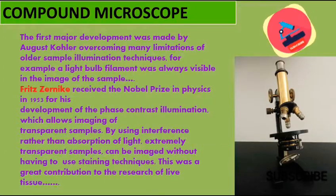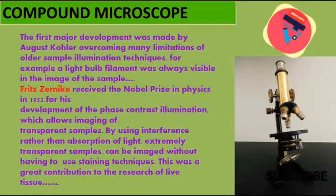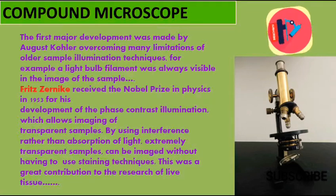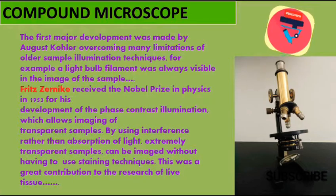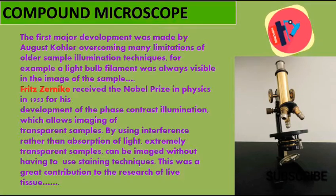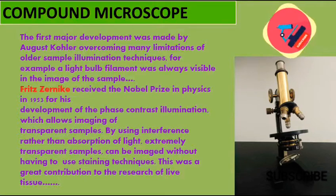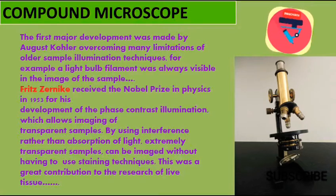The first major development was made by August Köhler, overcoming many limitations of older sample illumination techniques — for example, a light bulb filament was always visible in the image of the sample. Fritz Zernike received the Nobel Prize in Physics in 1953 for his development of phase contrast illumination, which allows imaging of transparent samples by using interference rather than absorption of light. This was a great contribution to the research of living tissue.